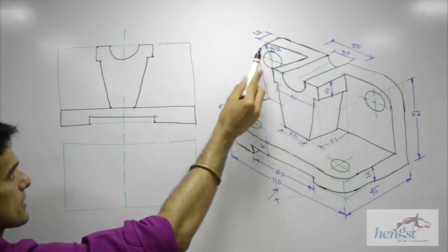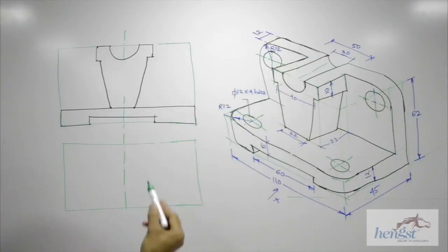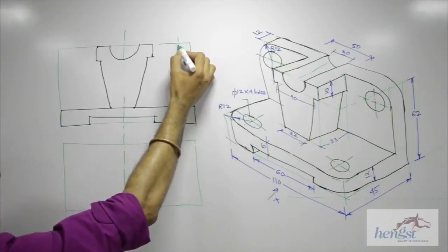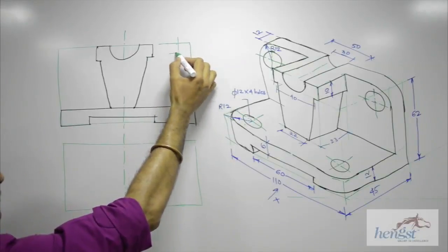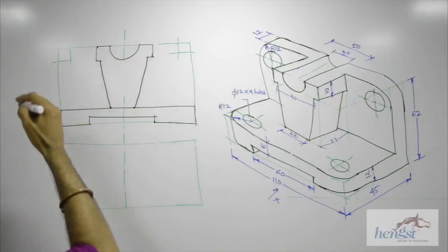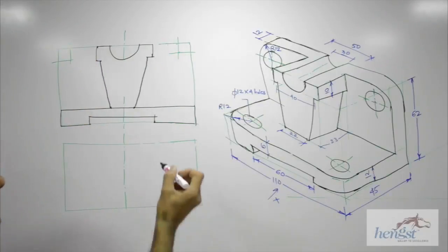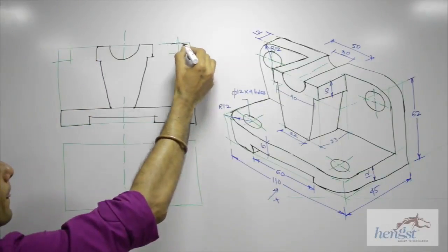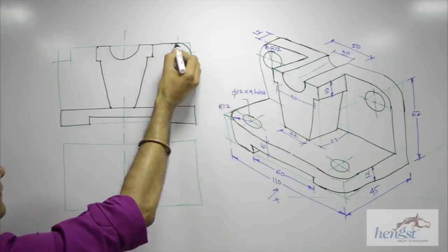Then how much is this? Radius 12. So what I can do is from here I can take 12, draw a line. Wherever they intersect, from that point I can draw radius 12. This will be straight.